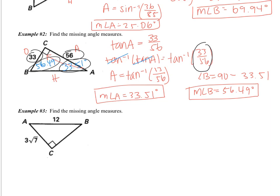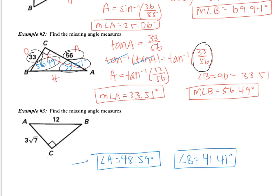Okay, we have example number three — again, find the missing angle measures. This is one I would like you to do on your own. Pause the video right now and find angles A and B. You should have gotten angle A to be 48.59 degrees and angle B to be 41.41 degrees. To find angle A, you should have used the inverse cosine. If you got these problems correct, good — move on. If you did not get these problems correct, pause the video right now and find your mistake.